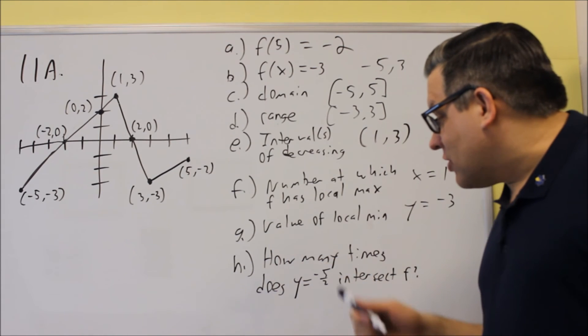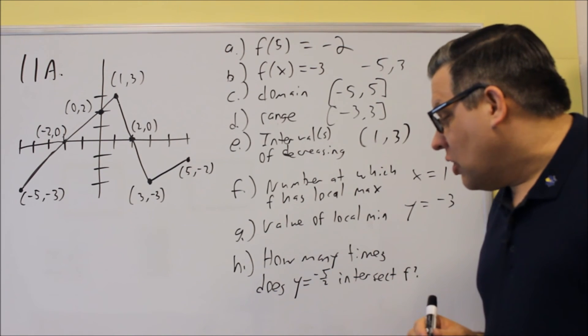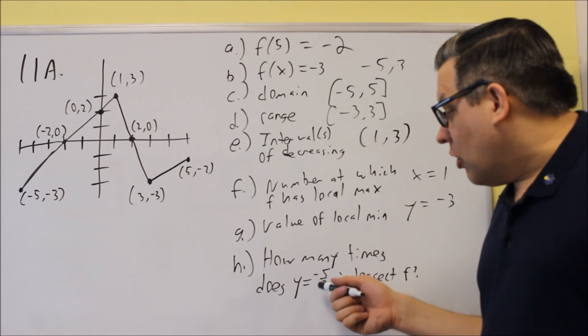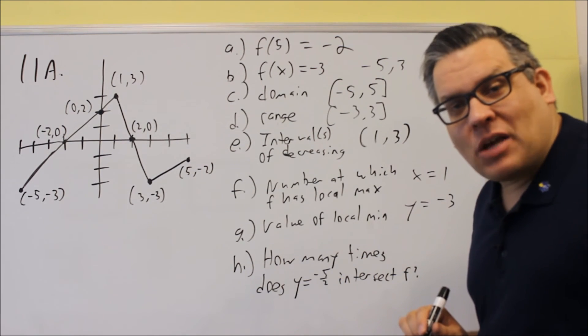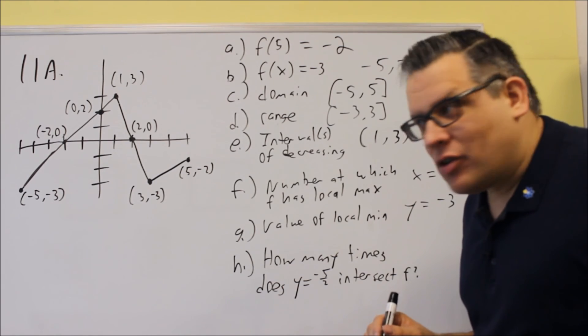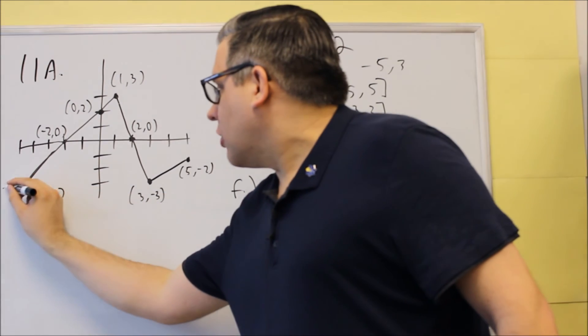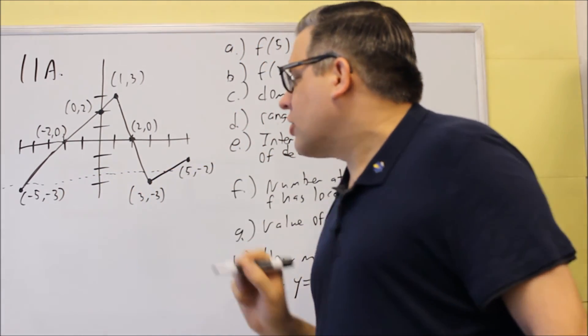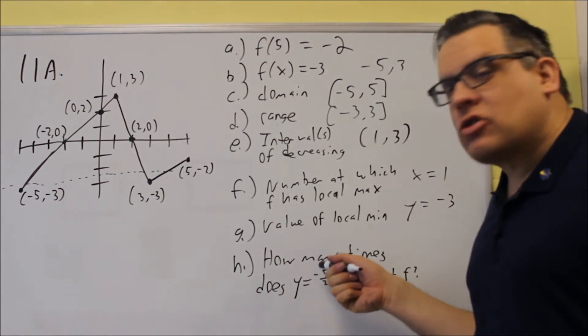And then for H, it says, how many times does y equal negative 5 halves intersect F? Well, negative 5 halves is the same thing as negative 2.5. So negative 2.5 would occur about right here. And if I were to draw a straight line through, that's what this represents, y equals as a horizontal line going through.